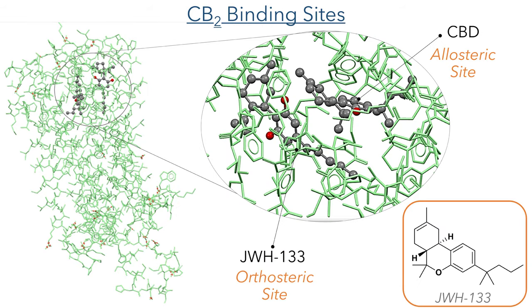Here we can see the binding sites in the CB2 receptor. In this structure, CBD is found in the allosteric site, while the orthosteric site, which is the primary binding site for this receptor, is occupied by the synthetic molecule JWH133 — a molecule specifically designed to have a stronger binding affinity for the orthosteric site than the natural ligand CBD.